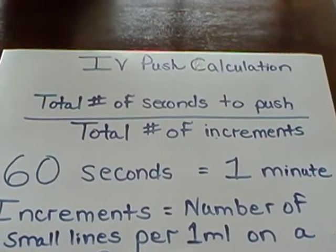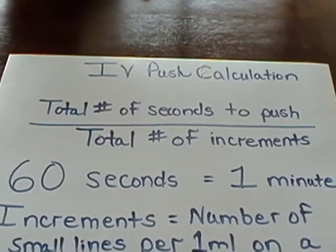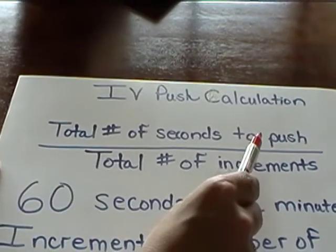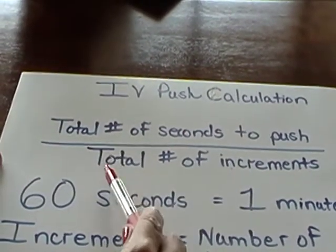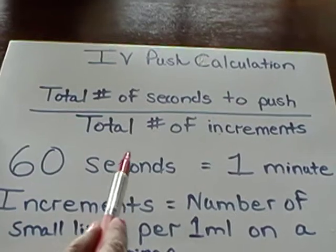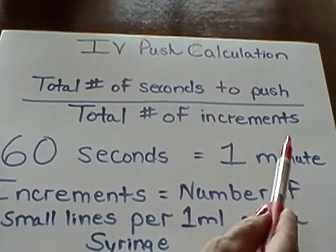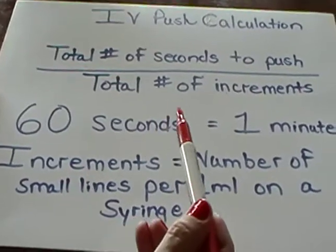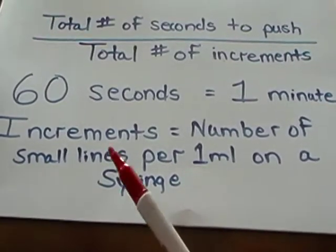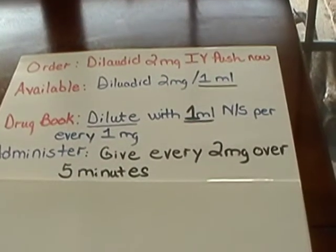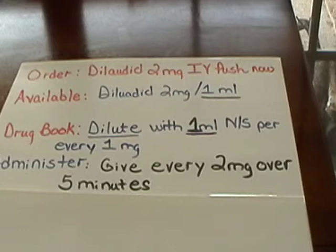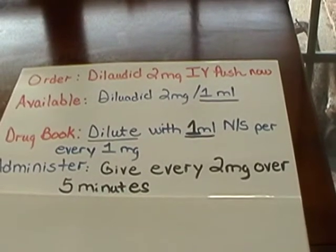Now that we know what information we need to collect and how to collect it, let's go back to our formula. We will need the total number of seconds that the medicine is to be administered over — that's our numerator. The total number of increments is our denominator. Remember that there are 60 seconds per every one minute, and remember that our increments are the number of small lines per one milliliter on your syringe.